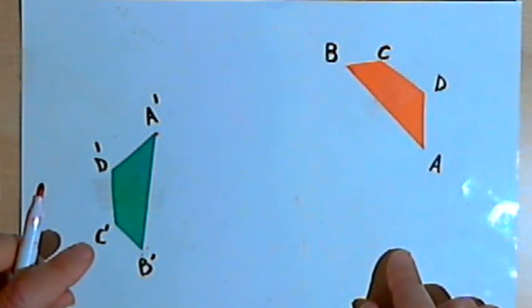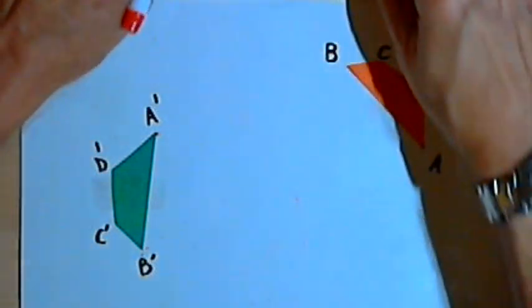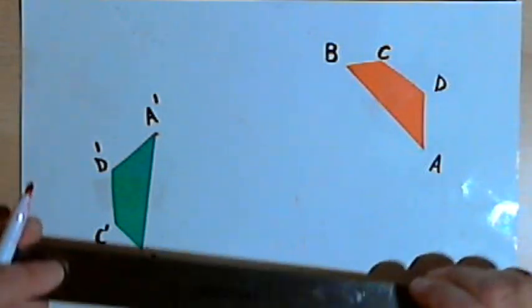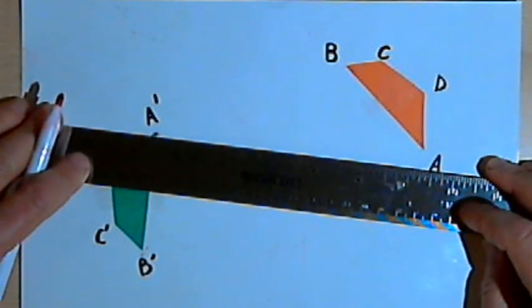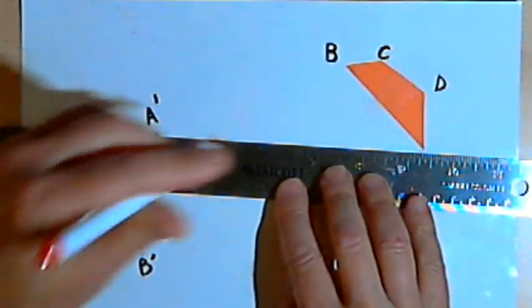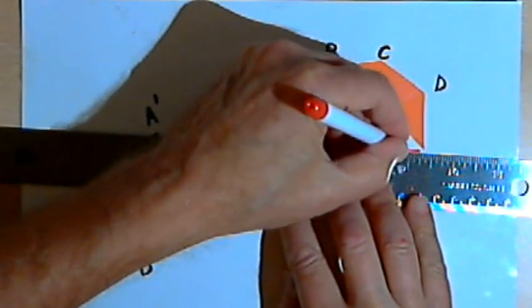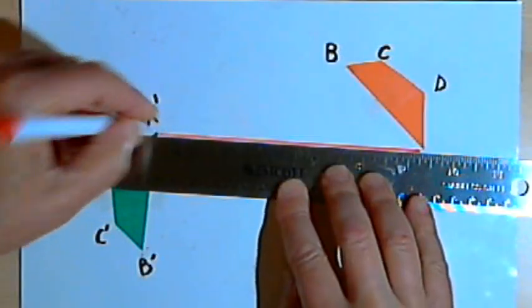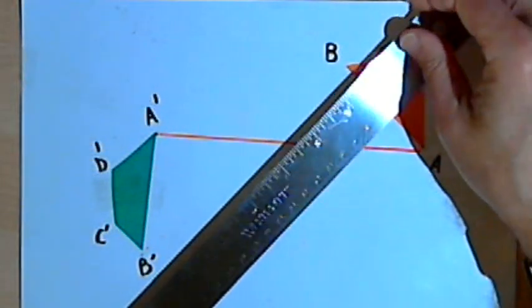The first step in finding the center of rotation is going to be to connect two pairs of corresponding points with a straight edge. So I'm going to connect point A and point A-prime, and then I'll also connect point B and point B-prime.